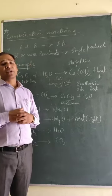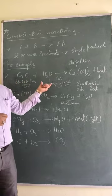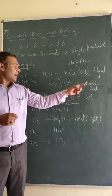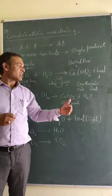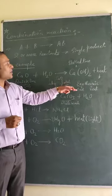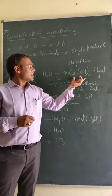Calcium oxide is also known as quick lime — in Hindi we also call it 'chuna'. When quick lime, that is 'chuna', is dissolved in water, heat is released. When heat comes out in any reaction, that reaction is referred to as an exothermic reaction. So this is exothermic as well as a combination reaction.